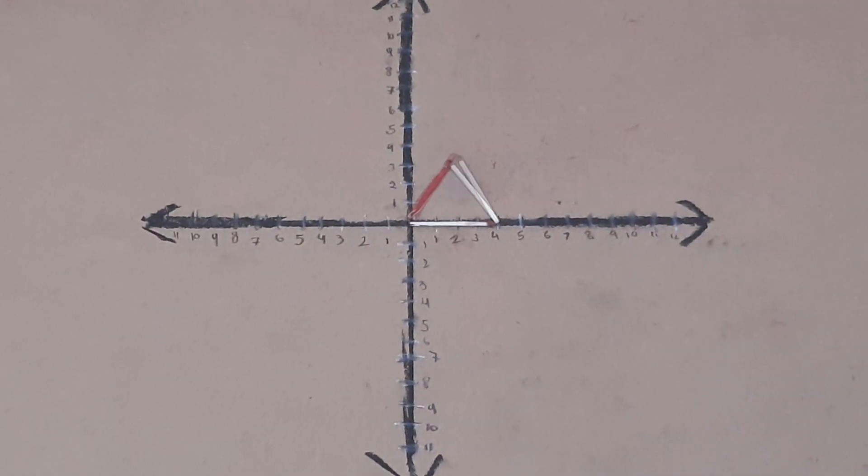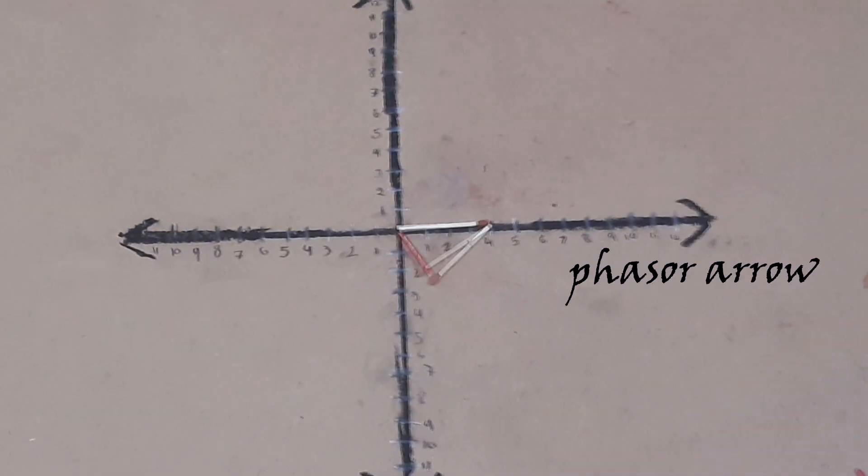Now you're going to ask, what is a phasor diagram? This is a phasor diagram, and these are phasor arrows.